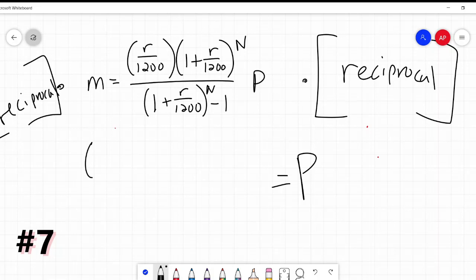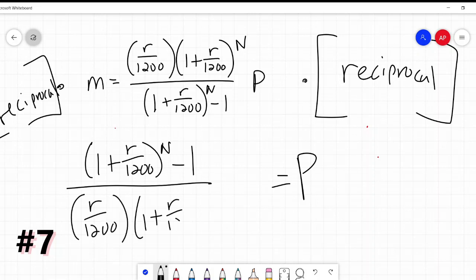So we multiply by the reciprocal. I will be left with P by itself, and on the other side will be the reciprocal of that. I will write it this time. So that (1 + R/1200) to the power of N minus 1, all over R/1200 times (1 + R/1200) to the power of N, all times M. That's my answer. That's all I had to do was flip that huge equation, that huge fraction upside down to make a reciprocal and multiply it by both sides.